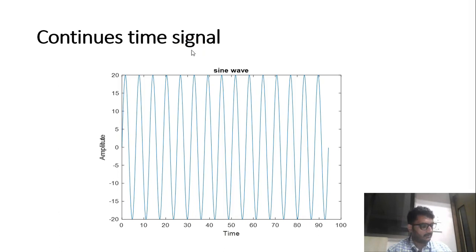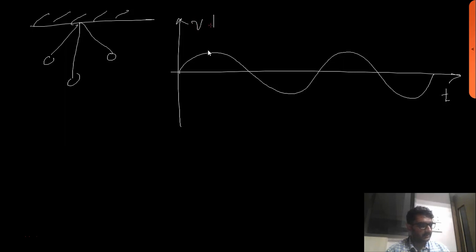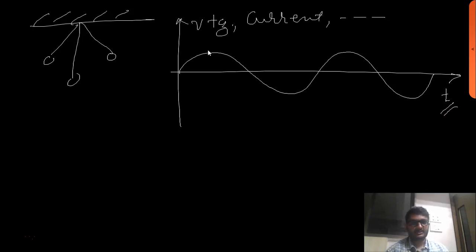When we learned about the pendulum, we drew a sine wave where on the x-axis we write T and on the y-axis we write voltage, current, or any other quantity. When we plotted the motion of the pendulum, it was a sine wave. On the x-axis we have time and on the y-axis we generally write voltage or current. It is always plotted with respect to time, and keep in mind, time is continuous.